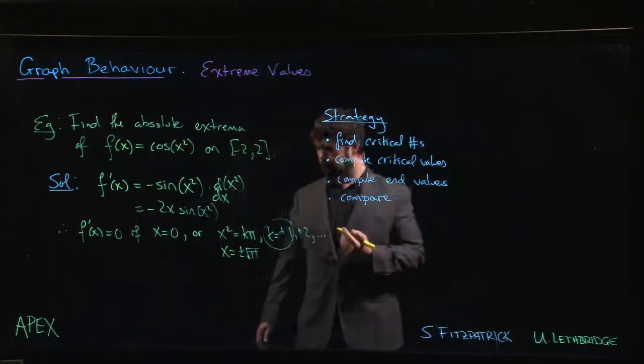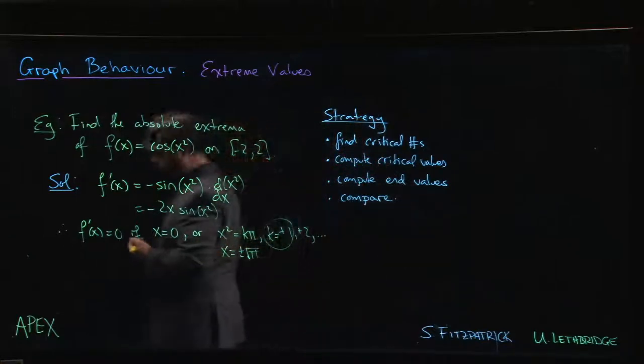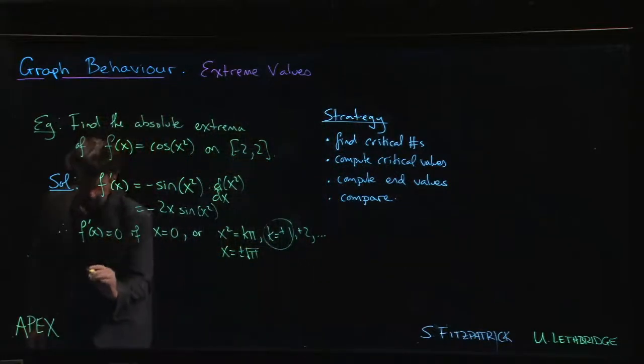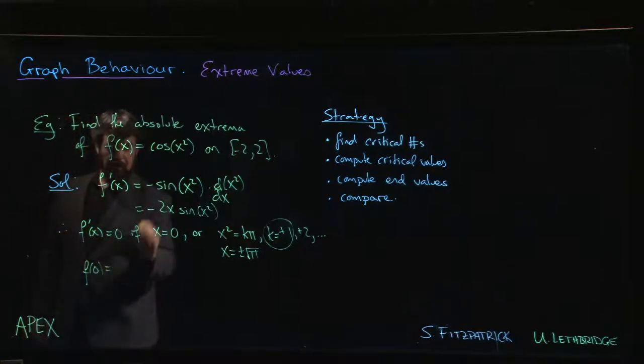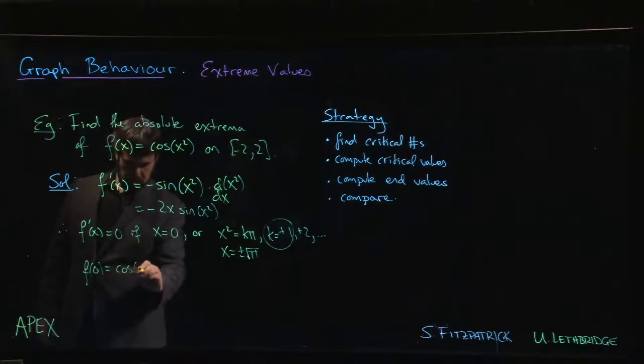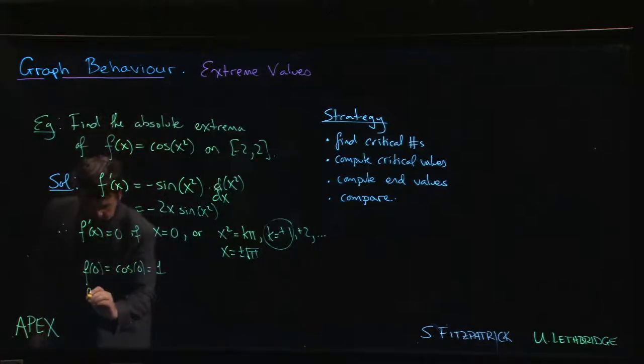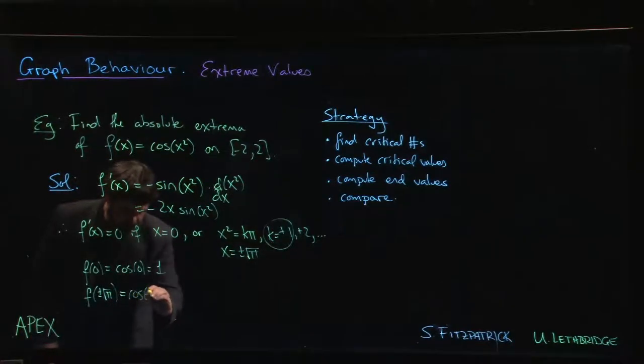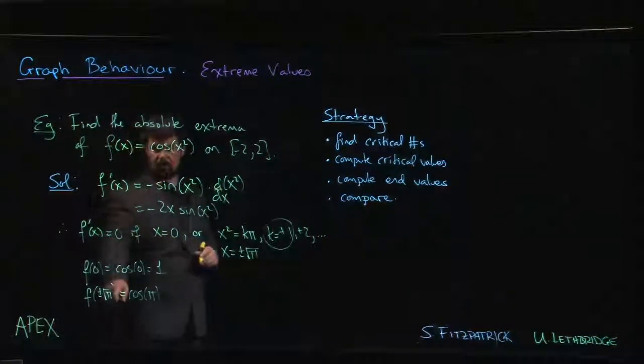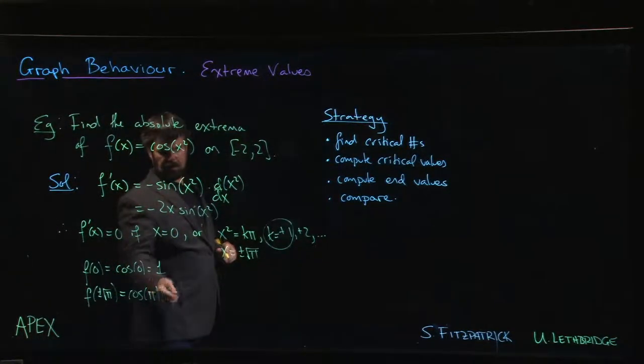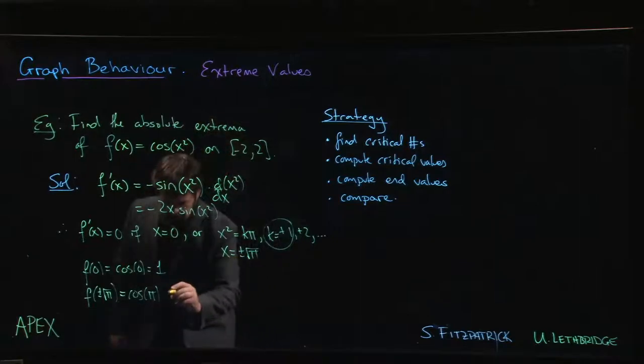So we have three critical numbers in our domain, and we compute the values. So f of 0 is going to be cos of 0 is going to be 1. f at either plus or minus root pi is going to be cos of pi, because we square it, we just get pi when we square the square root of pi, and cosine of pi is minus 1.